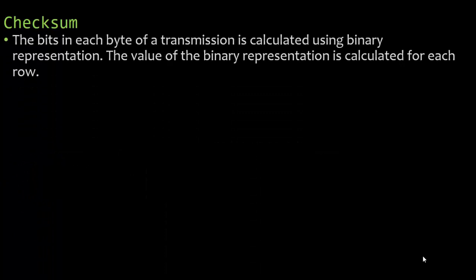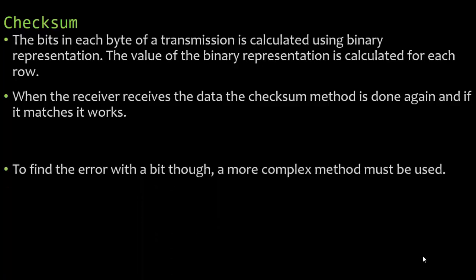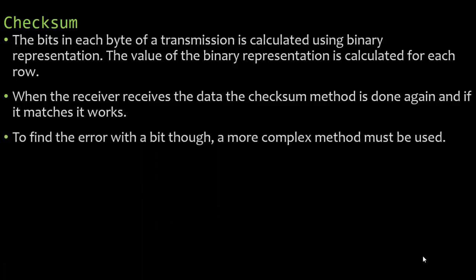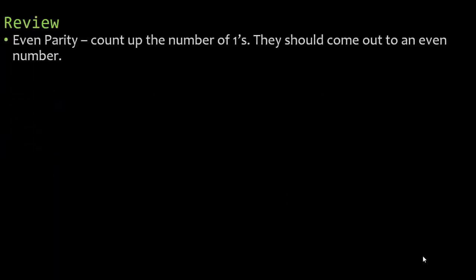The bits in each byte of a transmission are calculated using binary representation — the value of the binary representation is calculated for each row. When the receiver gets the data, the checksum method is done again; if it matches, it works. To find which specific bit has an error, a more complex method must be used: a parity block check.